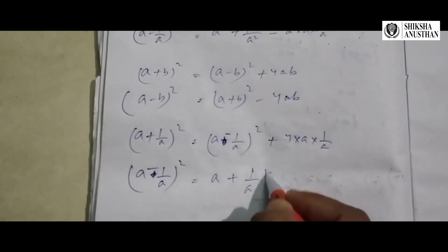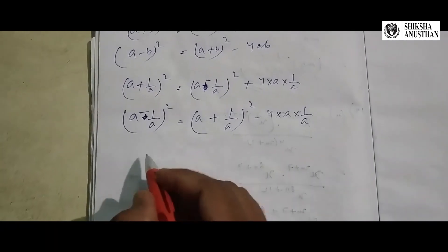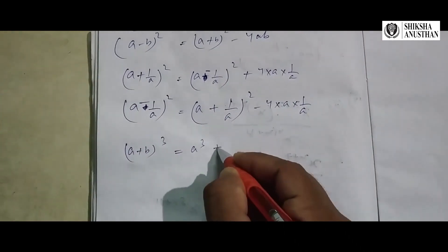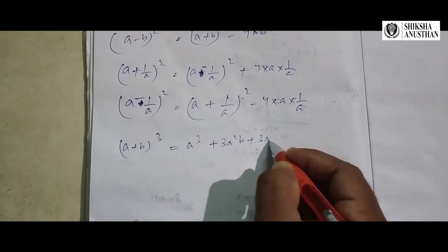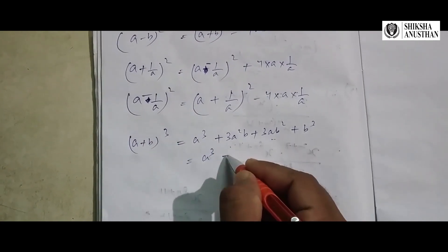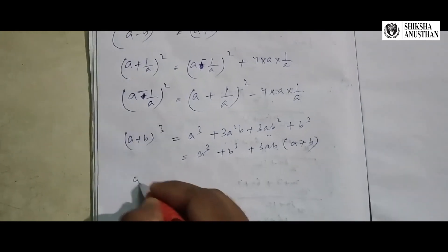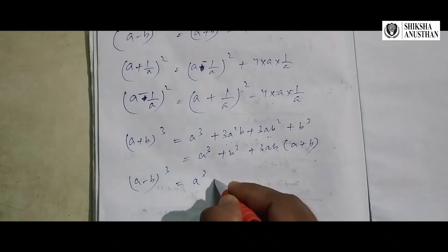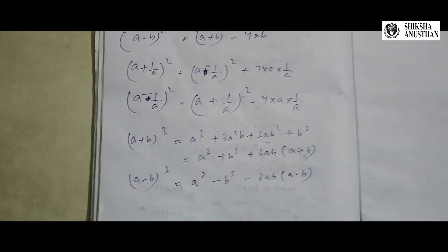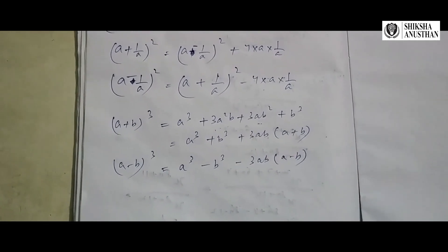(a + b) cube equals a cube plus 3a squared b plus 3ab squared plus b cube. Taking 3ab common, it can be written as a cube plus b cube plus 3ab(a + b). For (a - b) cube: a cube minus 3ab(a - b) minus b cube. From these you can also calculate a cube plus b cube, which is one of the common questions.